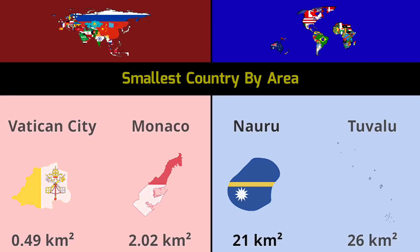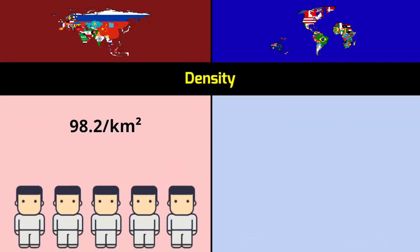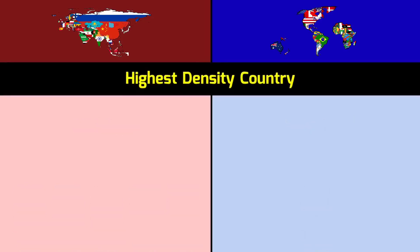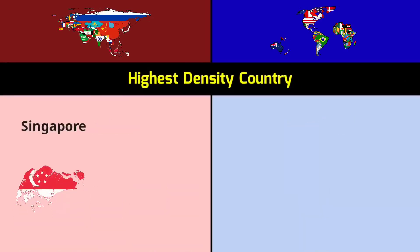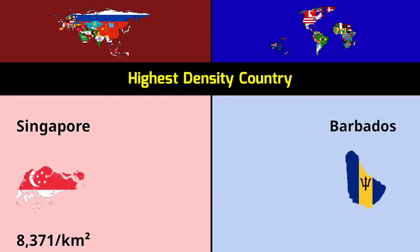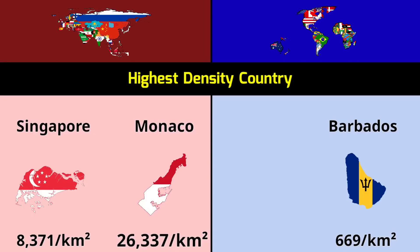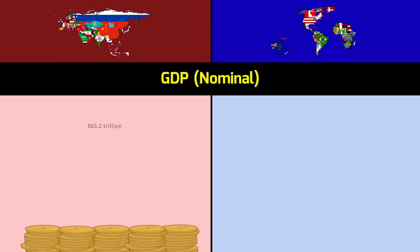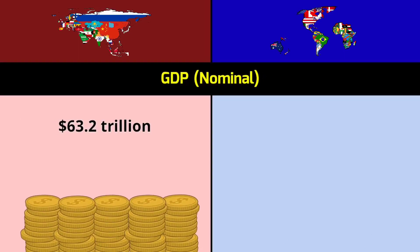Population density: Asia 98.2 per square kilometer vs Rest of World 27.1 per square kilometer. Highest density countries — Asia: Singapore 8,371 per square kilometer, Monaco 26,337 per square kilometer; Rest of World: Barbados 669 per square kilometer, Mauritius 624 per square kilometer. GDP nominal: Asia 63.2 trillion dollars vs Rest of World 37.2 trillion dollars.